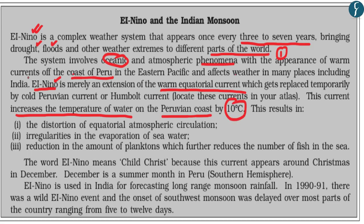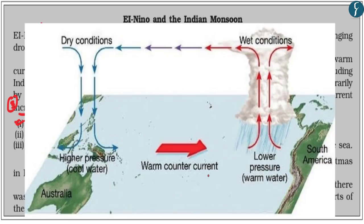The first major effect of El Niño is that it distorts equatorial atmospheric circulation. The warm equatorial current creates low pressure on the Peruvian/South American coast, while its shift there creates a high-pressure zone on the other side, leading to dry conditions in the Indo-Pacific region and wet conditions on the Peruvian coast.